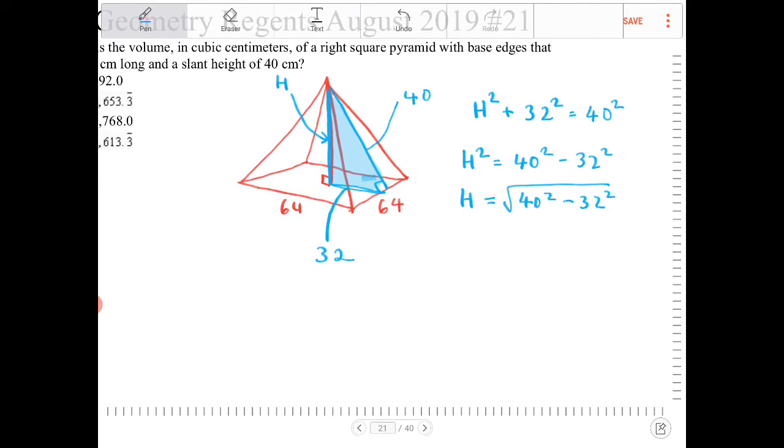So now that I have H, the volume of any pyramid or cone structure is the same. Its volume is equal to one-third area of the base times the height.